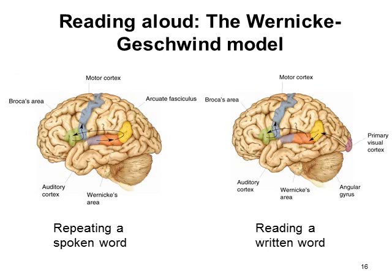According to the Wernicke-Geschwind model, there are two different pathways for input depending on whether you're repeating a spoken word or reading a written word. For repeating a spoken word — a classic example is a child learning language — the auditory cortex is first activated, sends input to Wernicke's area, passes up through the angular gyrus, through the arcuate fasciculus, and into Broca's area, which then stimulates the motor cortex controlling the muscles of the mouth and face, allowing you to speak.